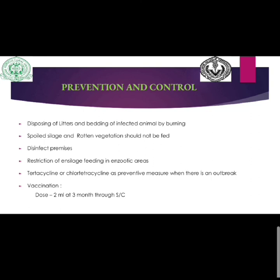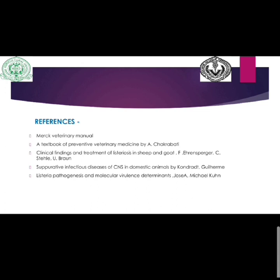For prevention and control, liters and bedding of infected animals should be disposed of by burning. Spoiled or poor quality silage and rotten vegetation should not be fed to animals. Premises should be disinfected and silage feeding should be restricted in endemic areas. Tetracycline or chlortetracycline can be added to feed as a preventive measure during outbreaks. Vaccination is important to control listeriosis; the vaccine is given at 2 ml subcutaneously at three months of age in sheep.